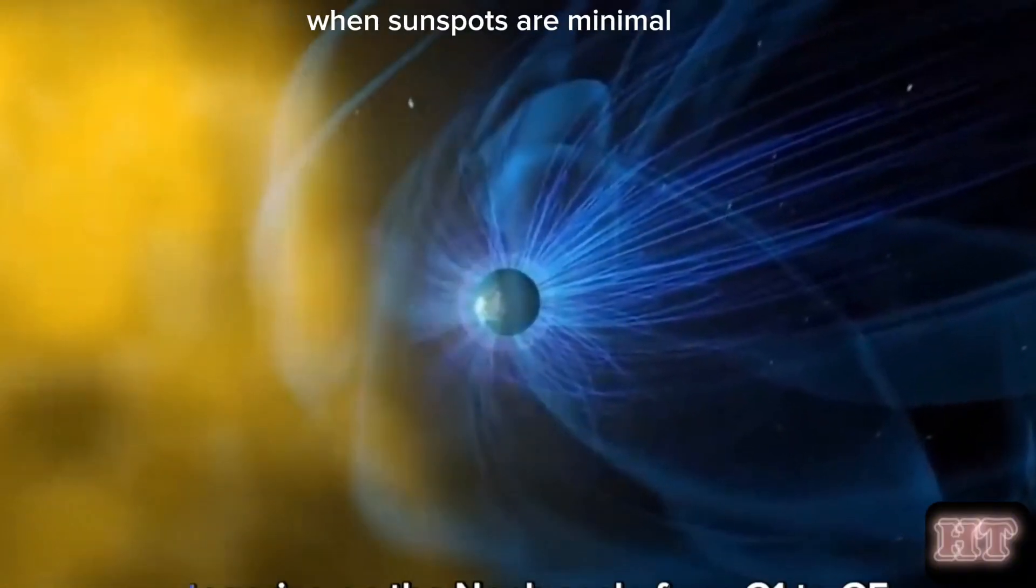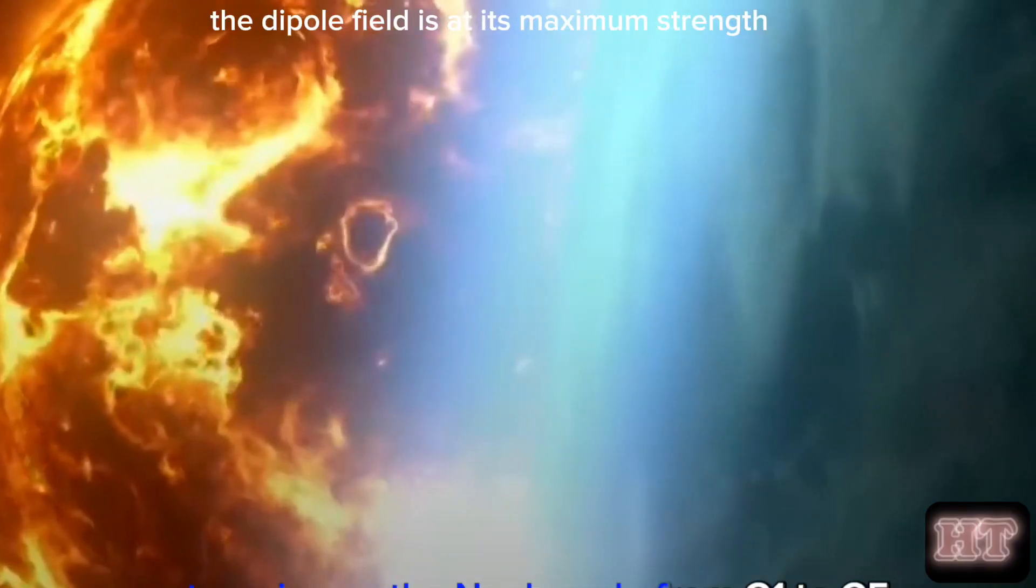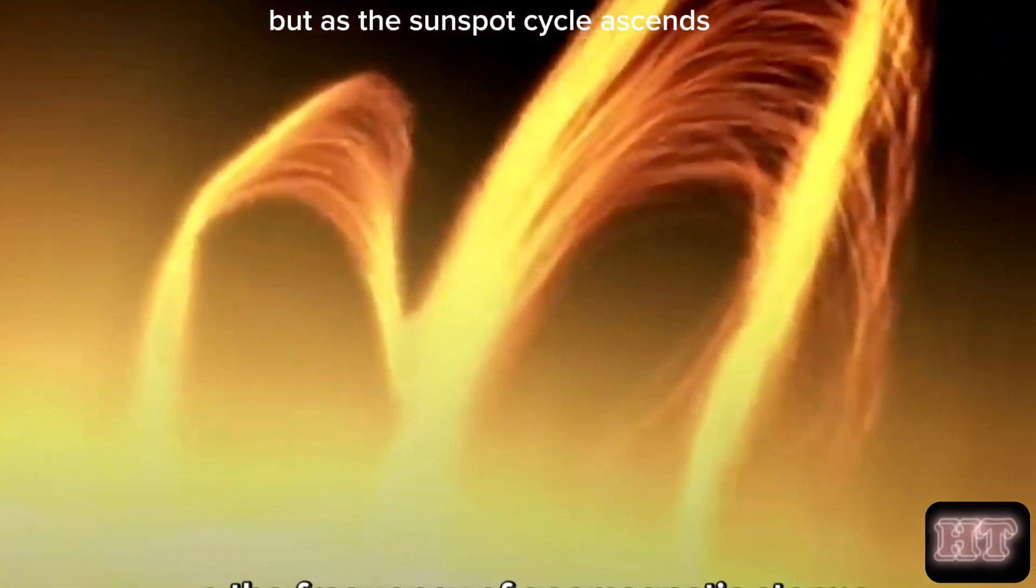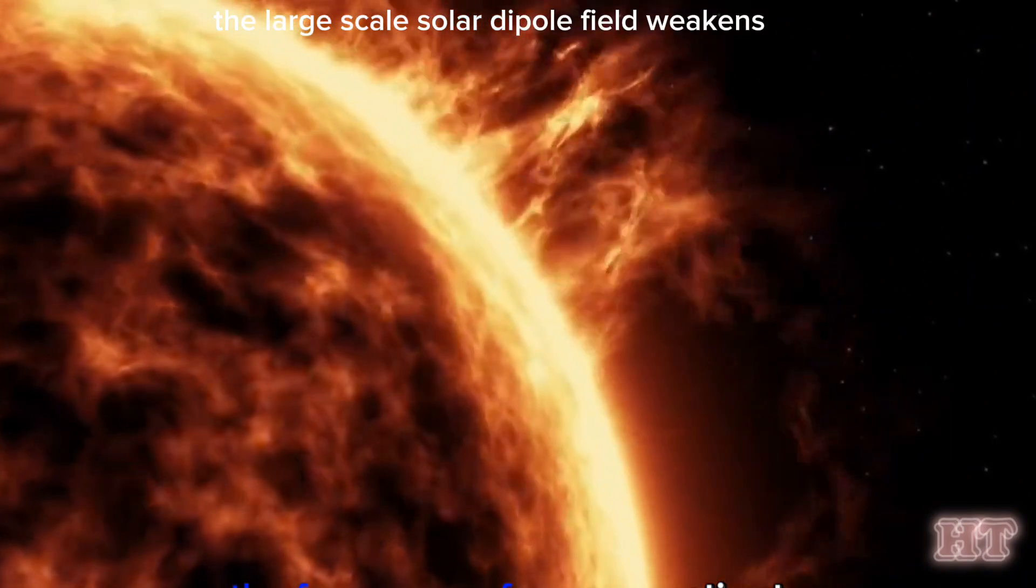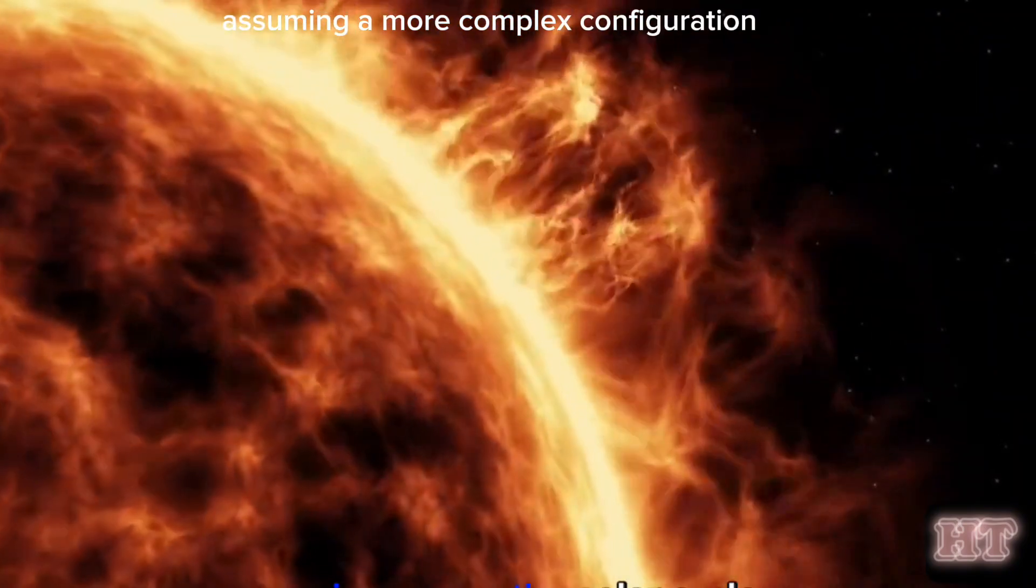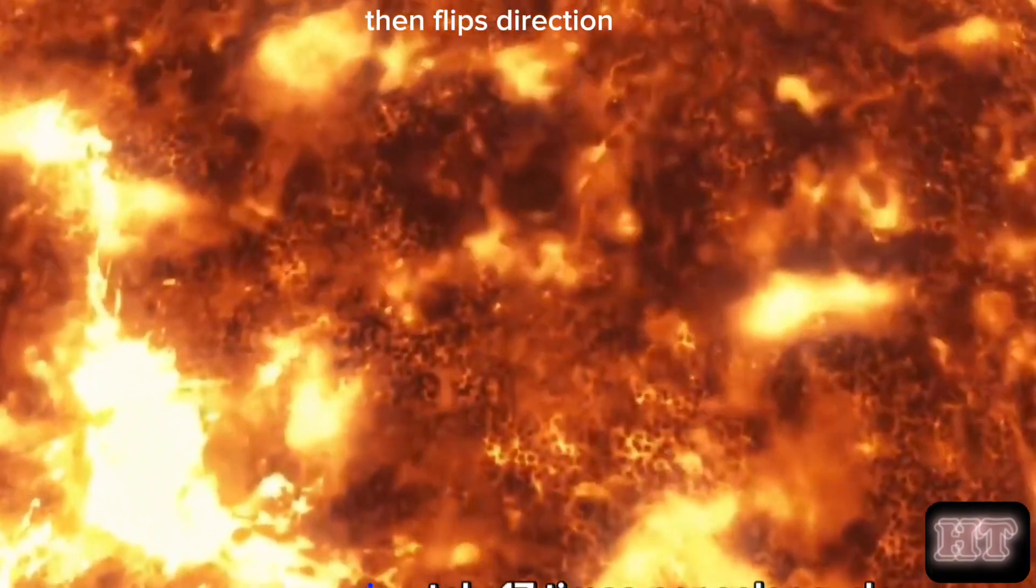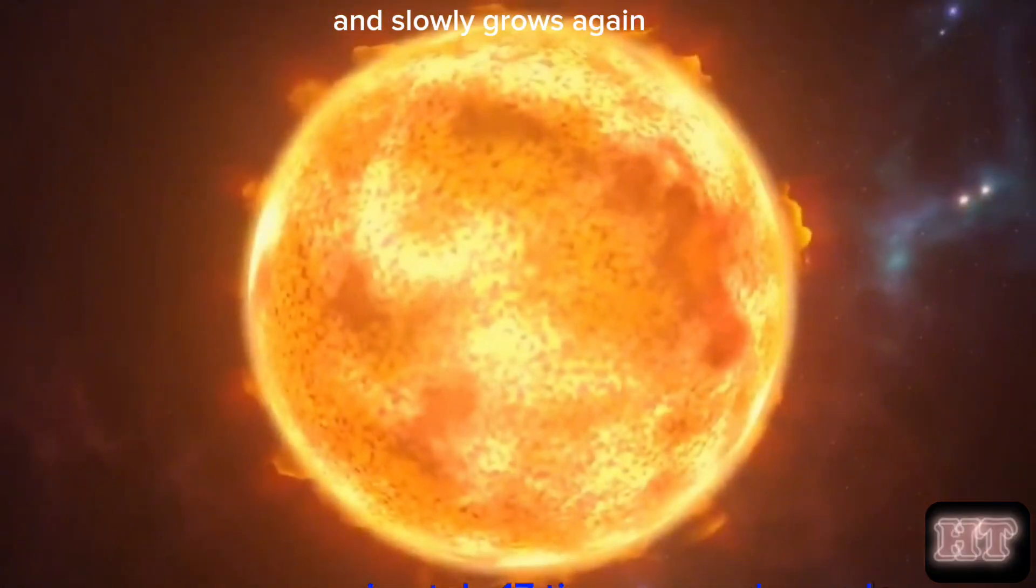Essentially, when sunspots are minimal, the dipole field is at its maximum strength, but as the sunspot cycle ascends, the large-scale solar dipole field weakens, assuming a more complex configuration. It vanishes during the sunspot cycle peak, then flips direction and slowly grows again.